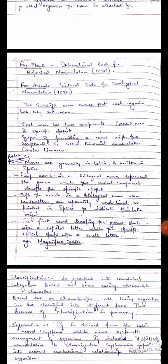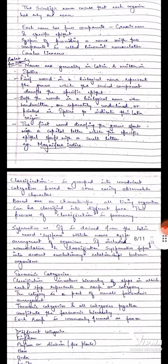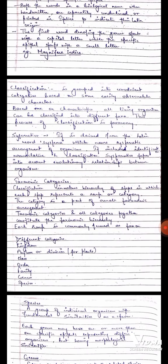Now we will talk about how we will classify them. Classification is grouped into convenient categories based on some easily observable characters. Based on characteristics all living organisms can be classified into taxa. This process of classification is called taxonomy.